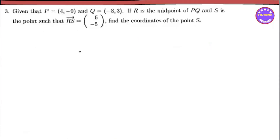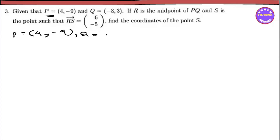Now let's look at the next part. We are given that the point P equals (4, minus 9), and Q equals (minus a, 3). R is the midpoint of PQ.